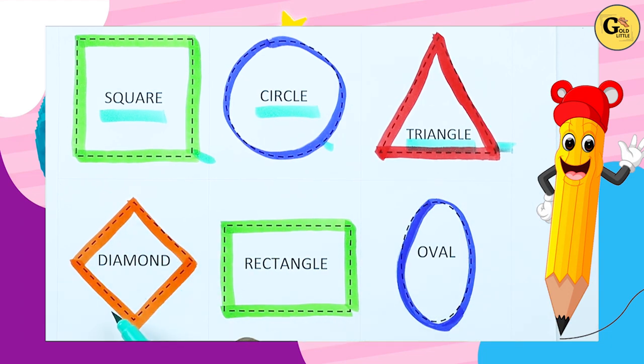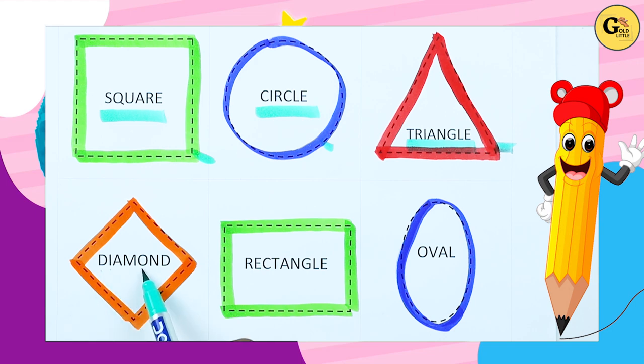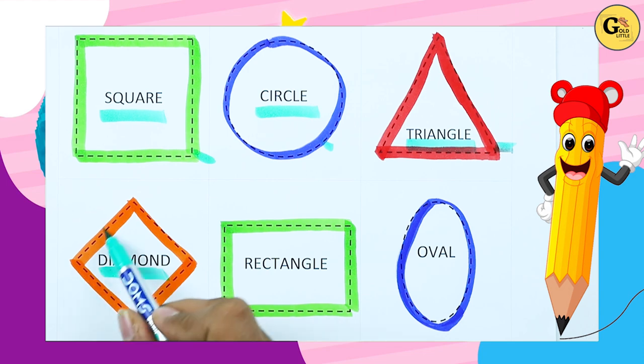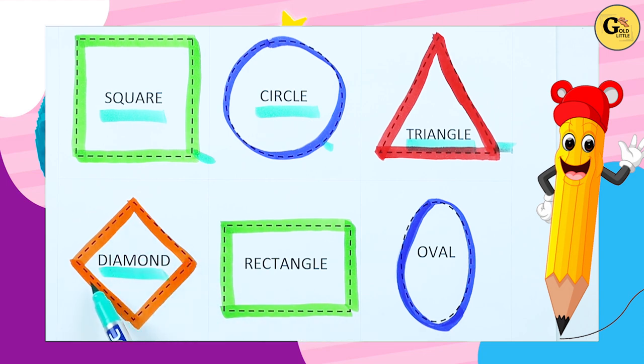Which shape is this? Diamond. D-I-A-M-O-N-D. It's a diamond, with orange color.